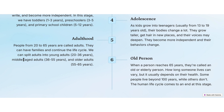Next they enter the adolescent stage — as kids grow into teenagers, usually from 13 to 19 years old, their bodies change a lot. They grow taller, get hair in new places, and their voices may deepen. They become more independent and their behaviors change. People from 20 to 65 years old are called adults. Adults can be split into young adults from 20 to 36 years old, middle-aged adults from 36 to 55 years old, and older adults from 55 to 65 years of age.